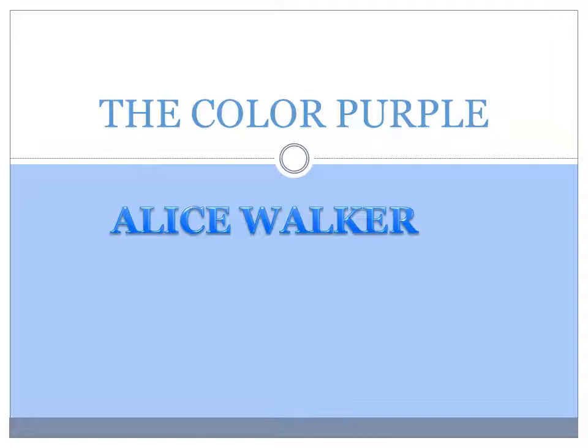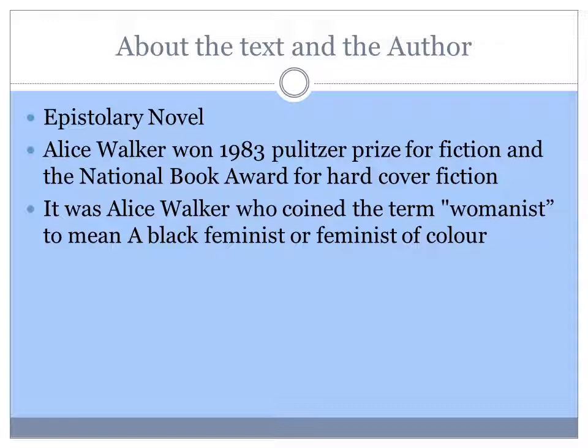Hello everybody, today we will see a short summary of Alice Walker's Color Purple. About the text and the author, this is an epistolary novel. Epistolary novel means the novel is in the form of letters.